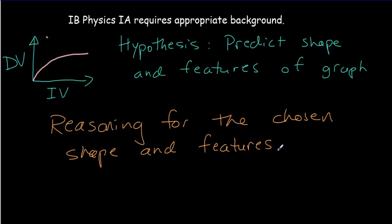That doesn't mean you're going to be correct, but that's not the purpose of a hypothesis. The purpose of a hypothesis is to make an educated guess as to what's going to happen. One of the most common mistakes I see in a hypothesis is a student will predict that the dependent variable is going to increase when the independent variable increases, and in all cases that's just not enough.